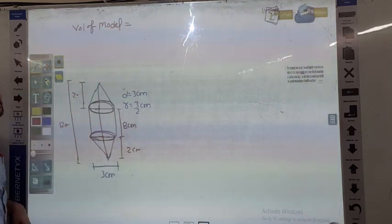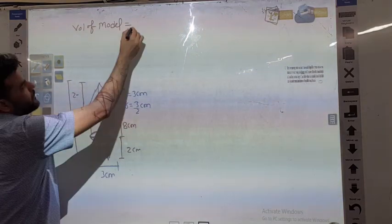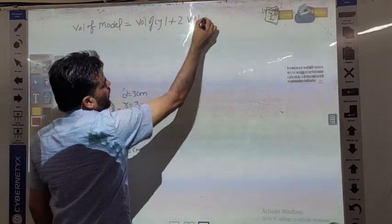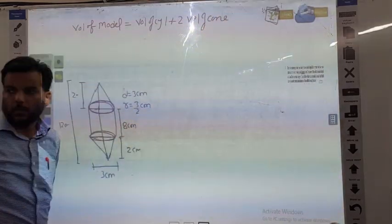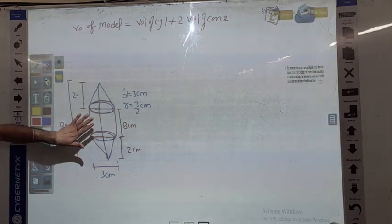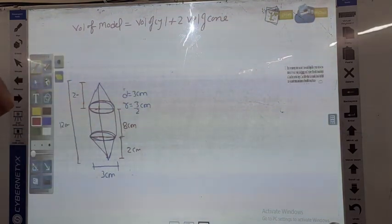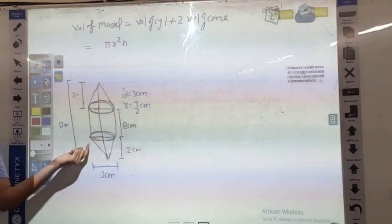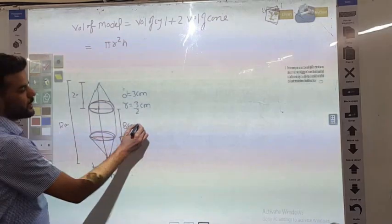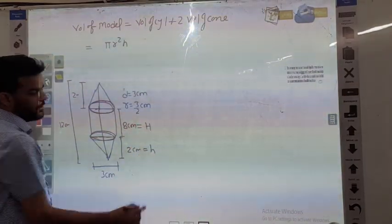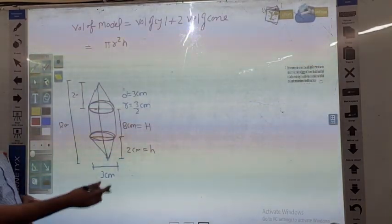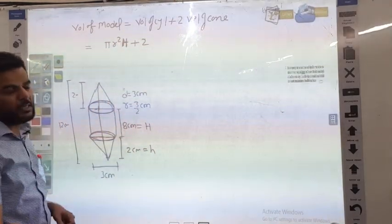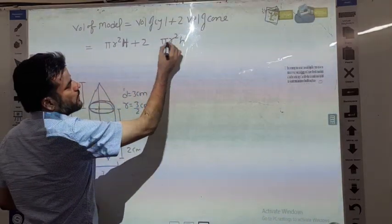Volume of air present in this model. Here is the formula. The volume of cylinder is πr²h. So here we can take the formula: πr²H plus 2 times the volume of the cone, which is 1/3πr²h.